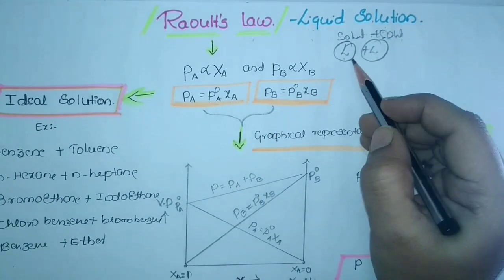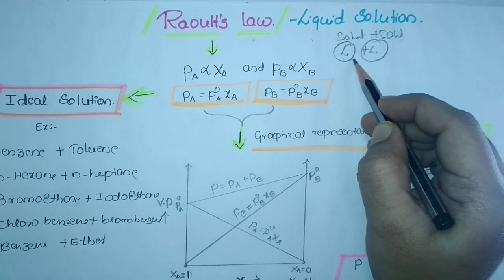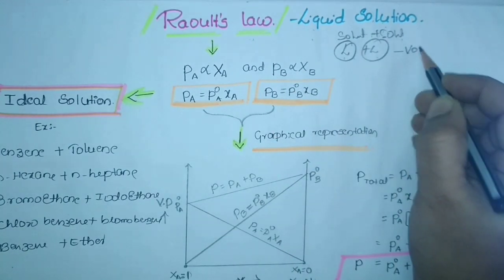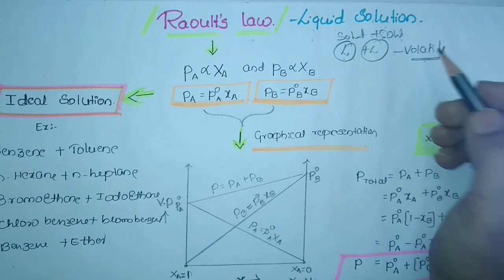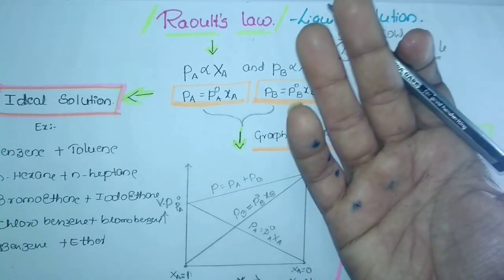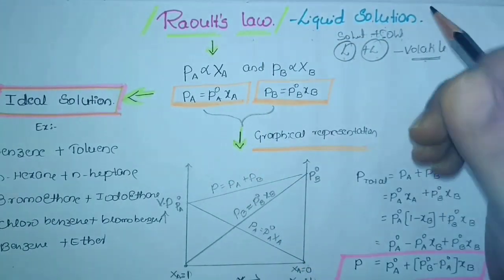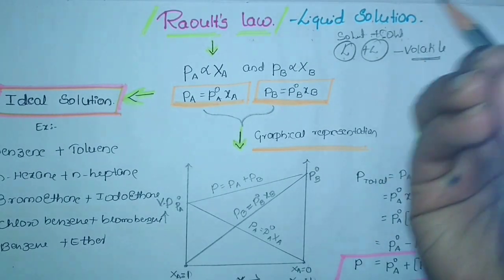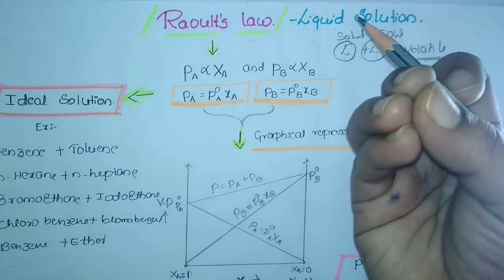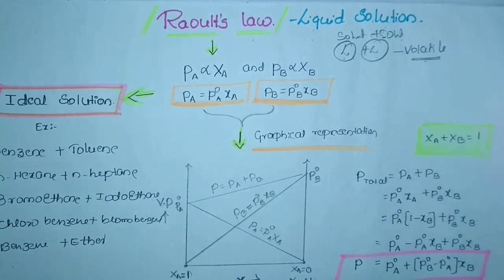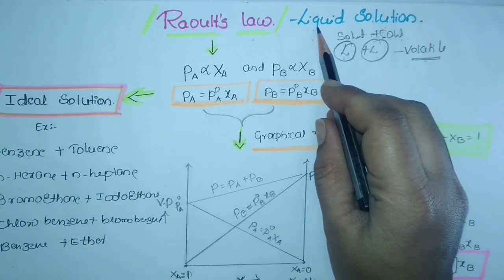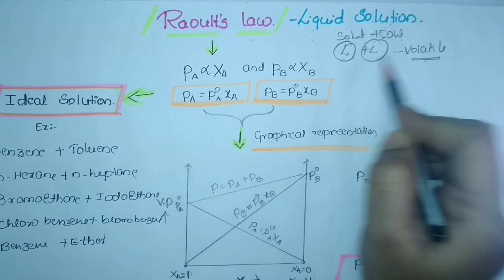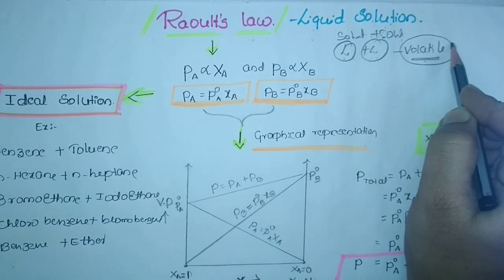The two liquids which obey Raoult's law are volatile in nature. Volatility means — for example, if I keep retail alcohol open to the atmosphere, it evaporates suddenly. Similarly, if I keep acetone (nail polish remover) open, it evaporates suddenly. Such solvents are known as volatile solvents. So liquid solutions under Raoult's law consist of liquid plus liquid, and both are volatile — both will evaporate when in contact with the atmosphere.